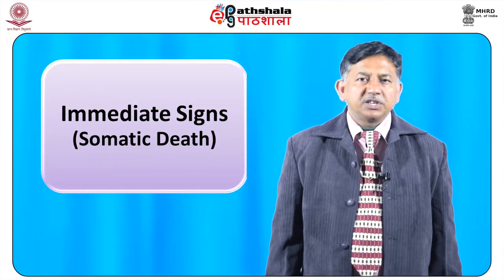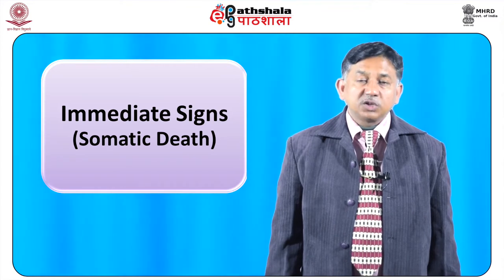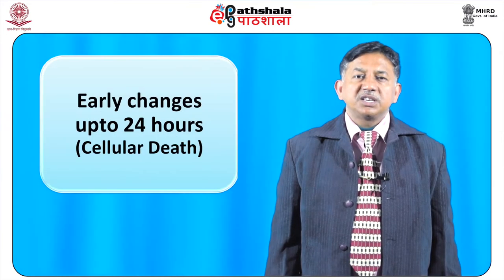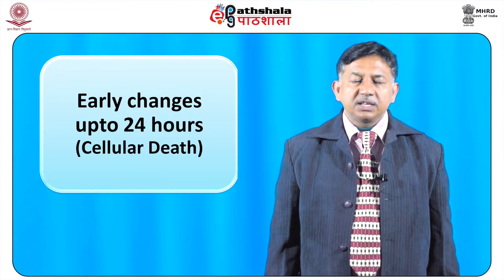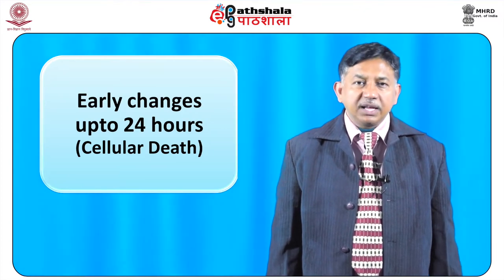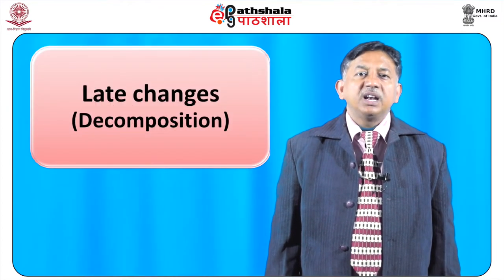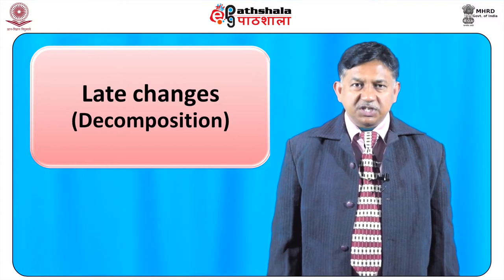The changes that take place are helpful in estimation of the approximate time since death. The signs of death appear in this order: we divide them into three immediate signs, also called somatic death; early changes after death occurring up to 24 hours, also called cellular death; and late changes or decomposition changes.